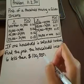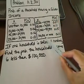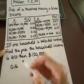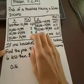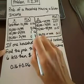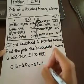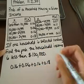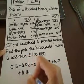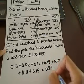If we want less than a hundred thousand, we're in every category except for a hundred thousand or more. So we add up all of those probabilities — less than ten thousand is 0.16, ten to fourteen-nine-ninety-nine is 0.06, and so on. Adding all of those up gives a probability of 0.89.